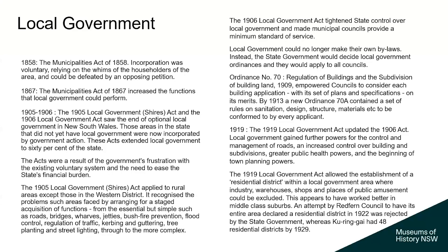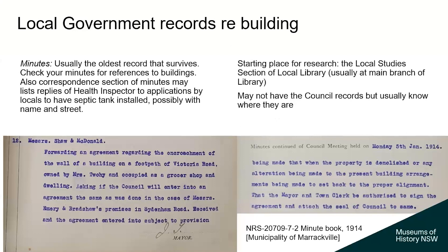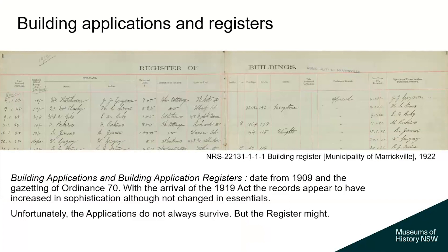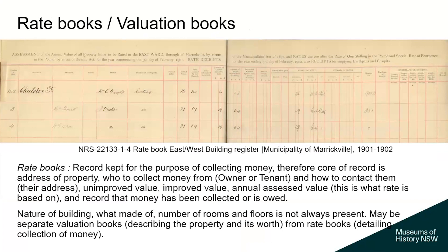So what records were created about building by local government? One of the first things is your minutes — they are often the oldest and will have references to letters to and from people who are building. This example is from Marrickville, and by 1914 people are still building on footpaths when they shouldn't be. You've got the building application registers — the applications don't always survive, but you might get a register from your local area; this Marrickville one dates to 1922 with limited information about the house. And you've got rate books and valuation records. The rate book is basically about payment of rates with very limited information on the house itself, but it at least tells you there was a cottage in that locality at that time. The valuation books actually provide more information about the building itself.